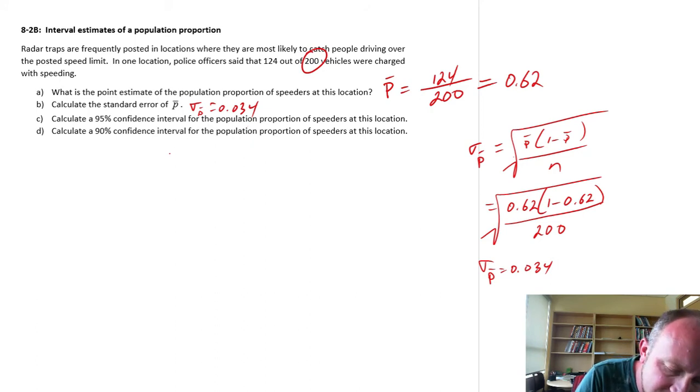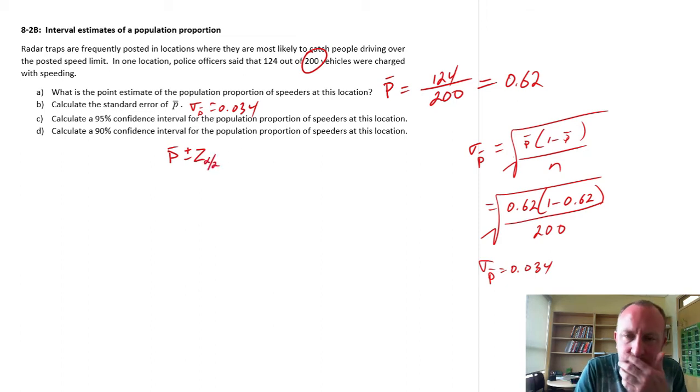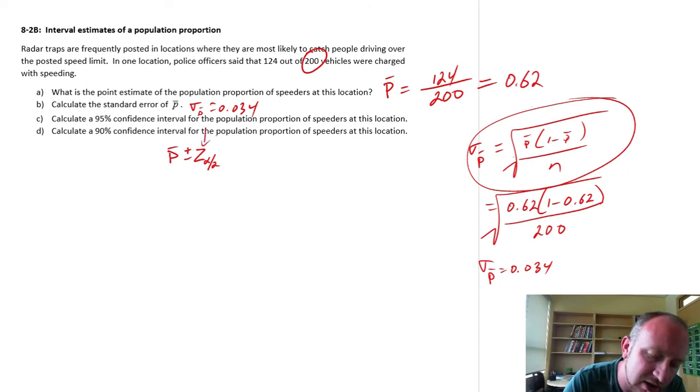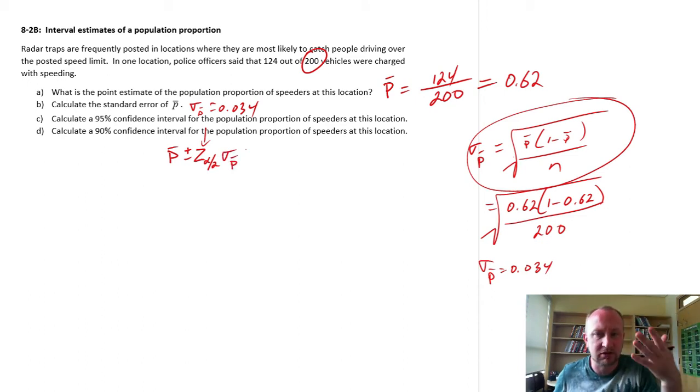The formula that we need for our confidence interval estimates: P bar plus or minus z alpha by 2 times the standard error. When we're working with proportions, this is under that same category as using the normal distribution to approximate a binomial distribution. That's why you've probably seen this formula before when we were looking at these approximations. This is a binomial variable, they're either speeders or they're not speeders.